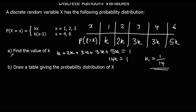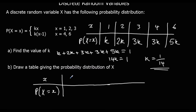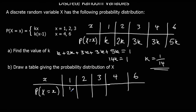So we can redraw our probability distribution. Since k is 1/14, the probability of x = 1 is 1/14, for x = 2 it's 2/14 (or 1/7), for x = 3 it's 3/14, for x = 4 it's also 3/14, and for x = 6 it's 5/14.